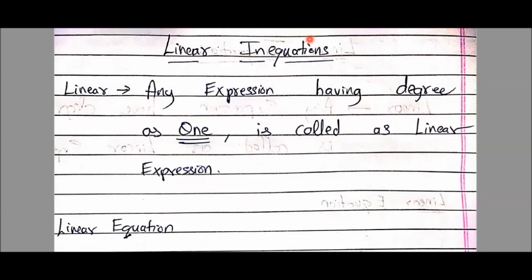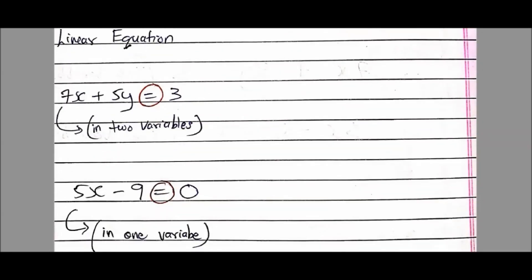Now coming back to the name of the topic — linear. We understood what an inequation is, but before studying inequations, let's revisit our traditional equations. On the screen: linear equation. Linear means degree should be one. The power of X is one, and Y's power — nothing mentioned — means by default it's one. We have two variables, and the degree of the entire expression is one, so it is called linear.